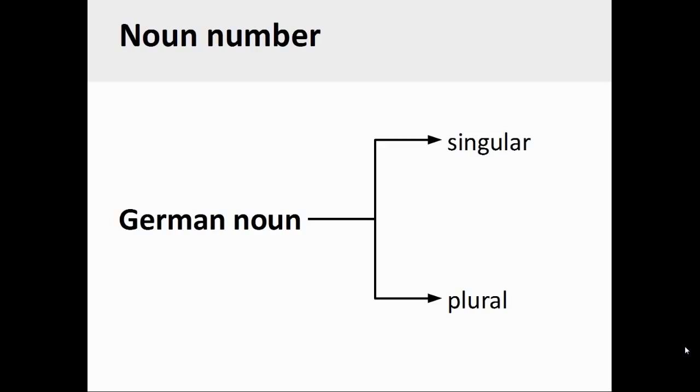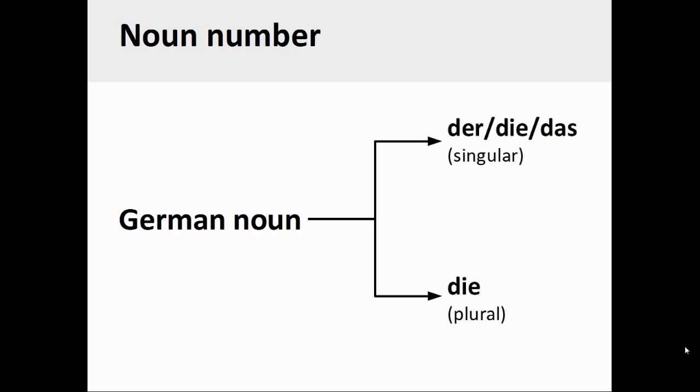As in English, German nouns can also be singular or plural. However, plural German nouns, unlike German singular nouns, do not manifest any gender, and their definite article is always die.